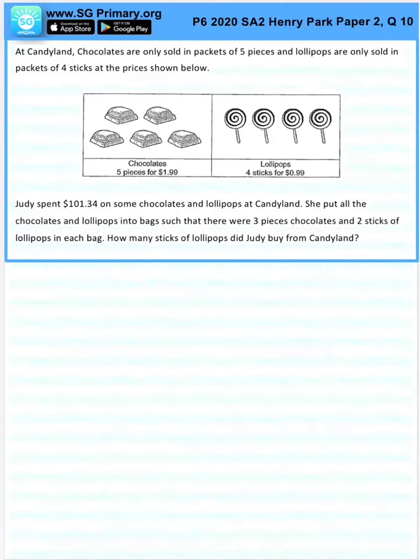Question 10. At Candyland, chocolates are only sold in packets of 5 pieces and lollipops are only sold in packets of 4 sticks at the prices shown below.